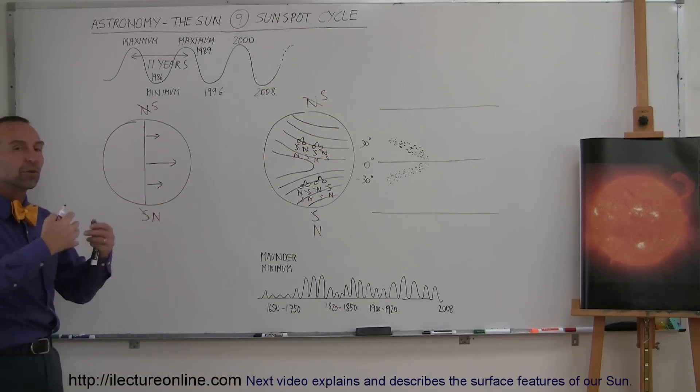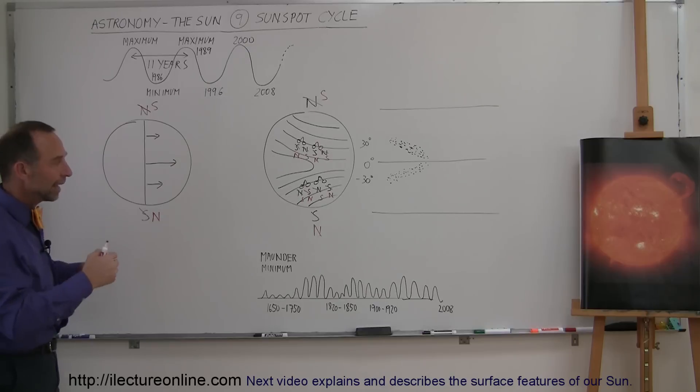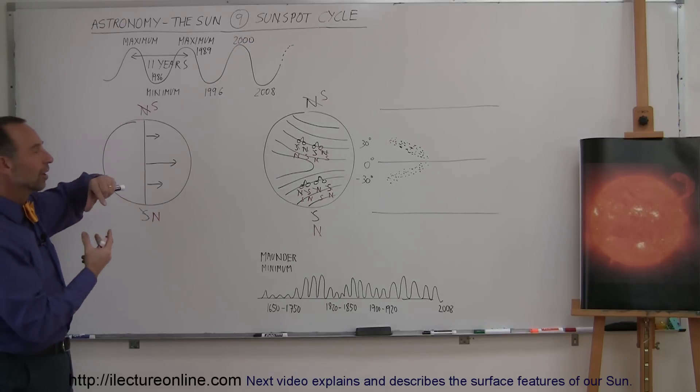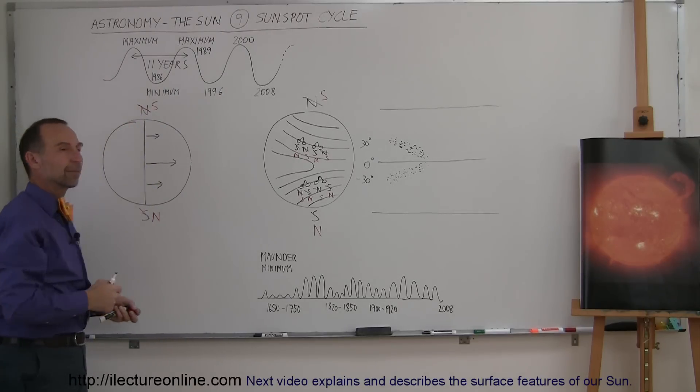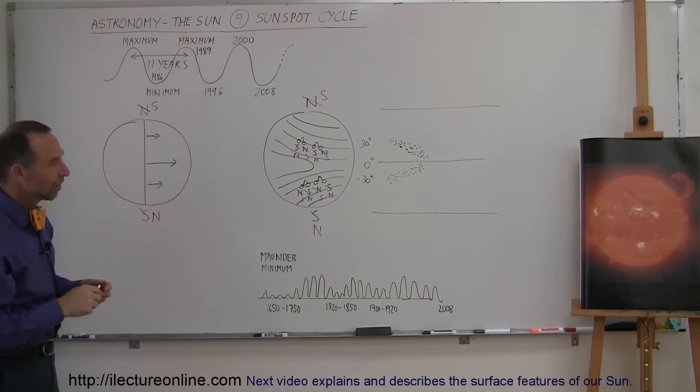And it goes through an 11-year cycle where more and more sunspots begin to appear on the surface. And then again, when it all gets twisted up, all of a sudden, the whole magnetic field system resets itself and goes back to where it was before with the north pole at the north and the south pole at the south. Then it goes again through an 11-year cycle like that.